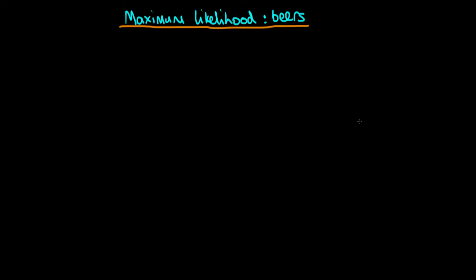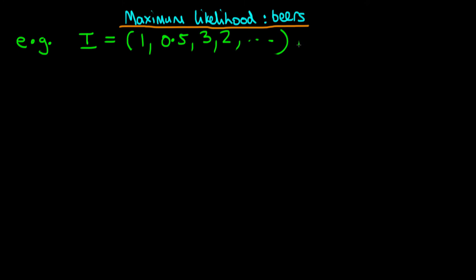In this video I want to explain how to do maximum likelihood estimation for our beer example introduced in the previous video. To recap, we imagined we worked in a bar and observed waiting times between consecutive beer orders, measured in minutes, recording n of these measurements. Under the assumptions that beer orders occur independently and at the same rate throughout time, an exponential distribution is a reasonable probability distribution to use.